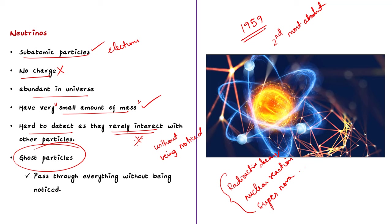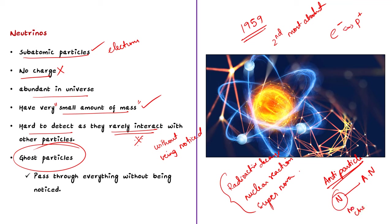Every elementary particle has an antiparticle. For example, electrons have an antiparticle called a positron. Neutrinos have an antiparticle called antineutrinos. But unlike electrons — which have negative charge and whose antiparticles have opposite charge — neutrinos have no charge, and their antiparticle antineutrinos also have no charge. So it is impossible to differentiate neutrinos from their antiparticles. These are some of the important facts about neutrinos.